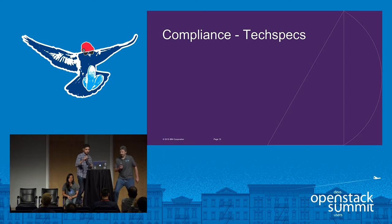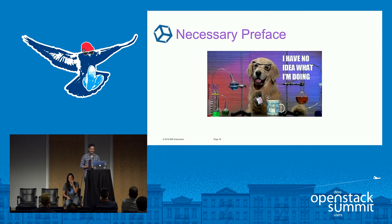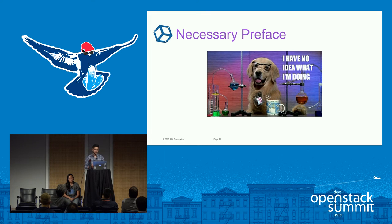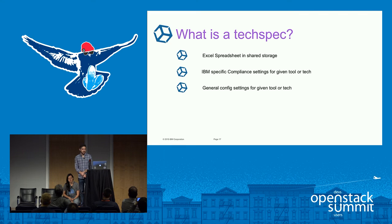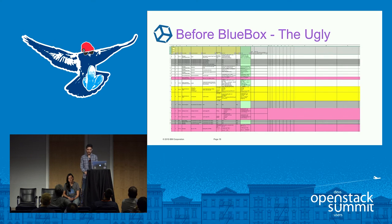Now we'll talk a little bit about tech specs. I was with IBM pre-Blue Box, so I've seen plenty of changes over the past year and a half or so. So, what is a tech spec? Before Blue Box, tech specs were a way of ensuring generic config settings as well as compliant settings for security folks. They were Excel spreadsheets in a shared storage space. Feast your eyes on the glory that is a tech spec — I had to compile these when Blue Box was acquired, and that was very fun.